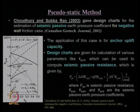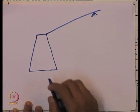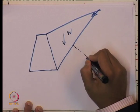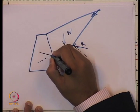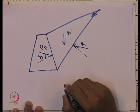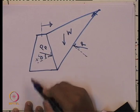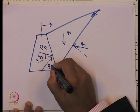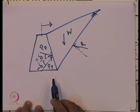For the passive condition of earth pressure on a rigid retaining wall, we have the failure plane and weight W. The passive earth pressure Pp acts at angle delta. When the wall tends to move in the forward direction, this is called positive delta. There can also be cases where the passive force acts in the reverse direction, which is called negative delta.